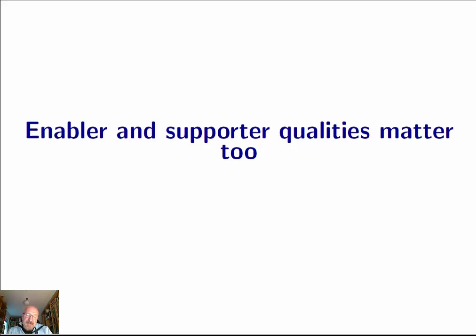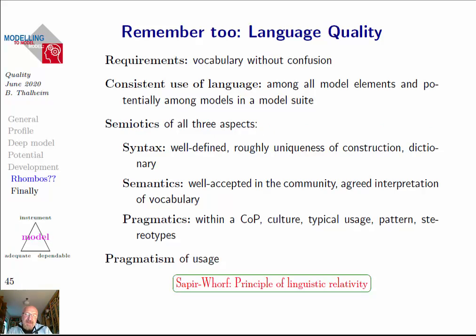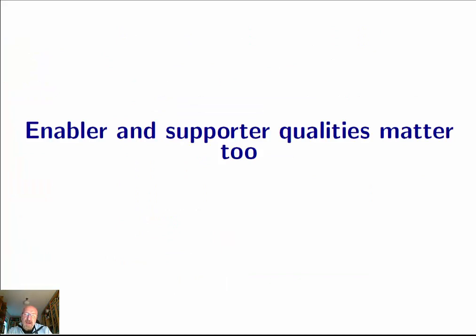When considering the ROM from chapters 10 and 13, you need enablers and supporters for quality. One enabler is language quality — we considered language properties in chapter 4 when discussing the Sapir-Whorf principle of linguistic relativity. The supporters are mainly coming from the world of origins you should consider systematically.